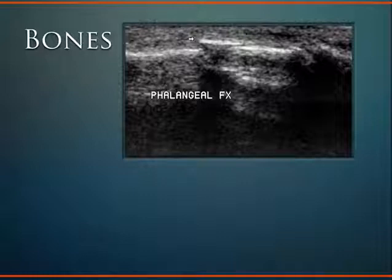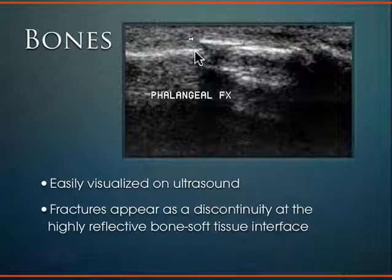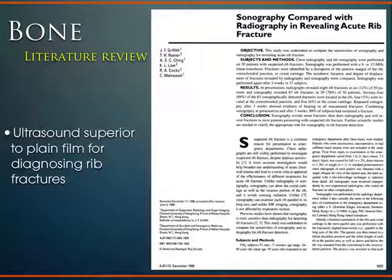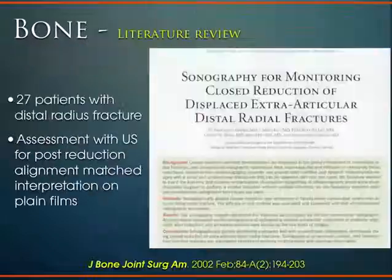Bones we can see very well — especially that superficial bony cortex structure — and consequently we can see pathology in bone as well, in particular fractures. As you can see on this image, this is the hyperechoic cortex line for a phalanx, and you see obvious disruption in that hyperechoic line showing a phalanx fracture. Very easily visualized. When looking for fractures, you basically see discontinuity in that hyperechoic line. A lot of people are studying this to make sure we're comparing to standard of care — x-ray, MRI, arthroscopy — and most studies are showing quite a benefit, showing it's either as accurate or in some cases more accurate than traditional modalities.